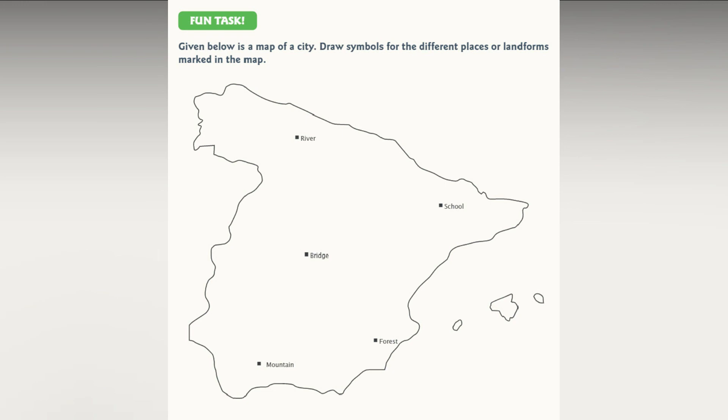Given below is a map of a city — draw symbols for the different places or landforms marked in the map; try to do this activity on your own. Students, I'm ending today's session here. We'll meet in the next session with more interesting and new topics. Till then, be safe and stay healthy.